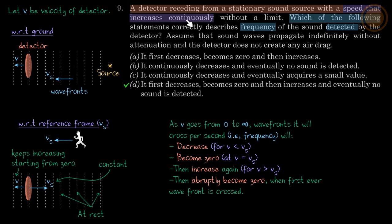Once the source is passed, which happens without limit, no more wavefronts will reach the detector. After that, wavefronts cannot be detected, so the frequency detected will become zero. So the answer is this.